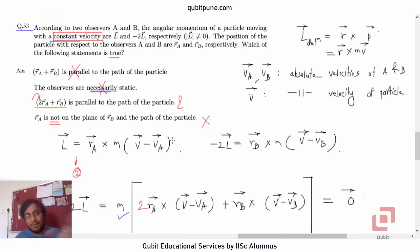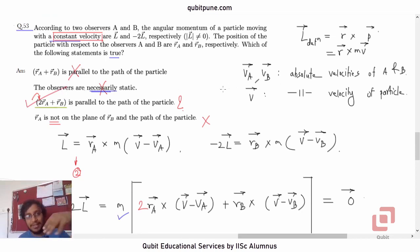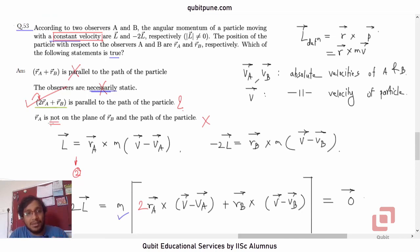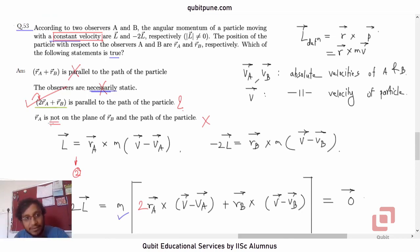Therefore, the answer to Q53 is option C: 2R̄_A + R̄_B is parallel to the path of the particle. To summarize: we relaxed option B's constraint by allowing moving observers, which led us to reject option A; option C remained in contention; and when we disproved option D under our simplified conditions, option C was the only one left. We did not change anything given in the original problem, so the constraints still apply, and since our case rejects three of four options, option C must be true in the general case.